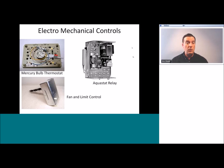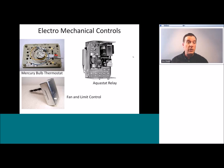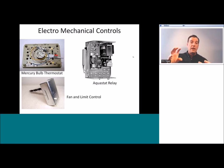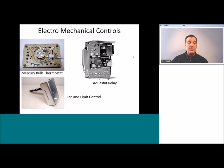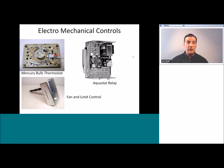The fan and limit control from old forced air furnaces has a temperature sensitive element that moves in response to temperature inside the furnace. As the furnace warms up, it moves and trips a switch to turn on the fan. At the end of a heat cycle, it moves back as things cool off to turn the fan off. It also has a dual purpose: if the temperature gets way too high, it trips a switch to shut off the burners so things don't overheat. Once again, something physically moving operates a switch which controls the final outcome.